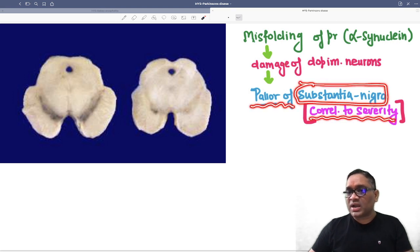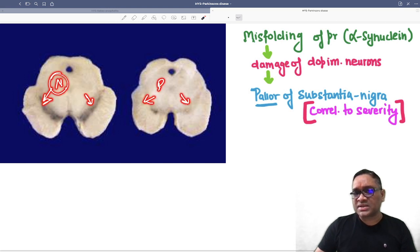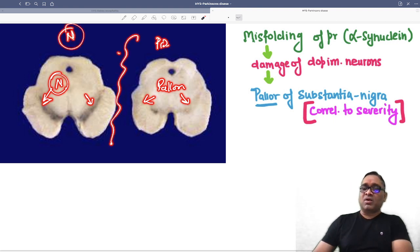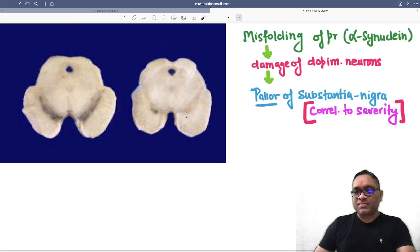You can see this is the normal brain—there is a dark colored area corresponding to dopaminergic neurons. Normally, dopaminergic neurons give you dark color, but because of neuron damage, now you can see pallor of the substantia nigra. This is Parkinson's disease versus normal brain tissue. Pallor of the substantia nigra is clearly visible—more pallor means more severity of the disease.